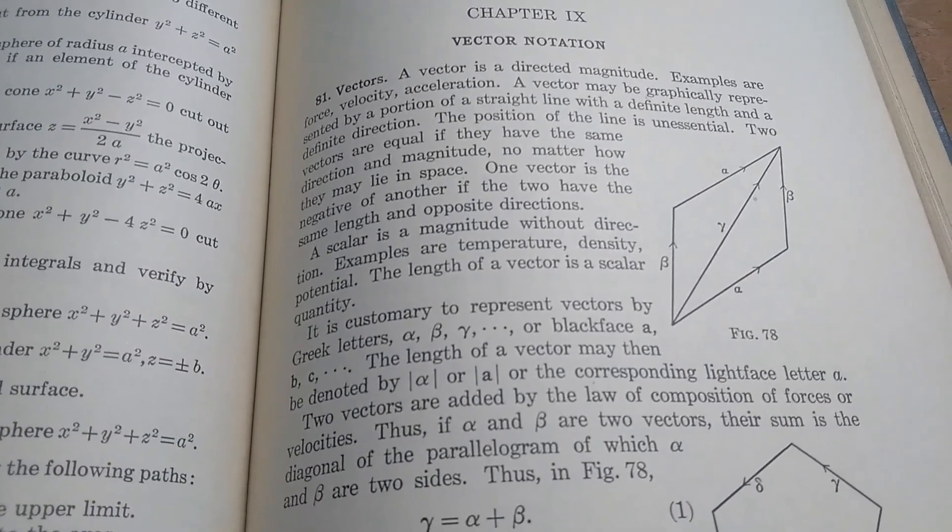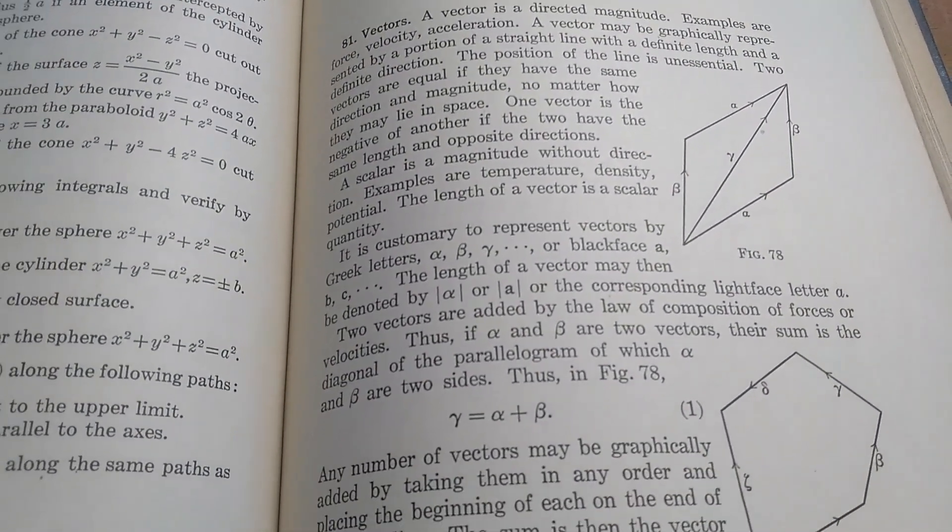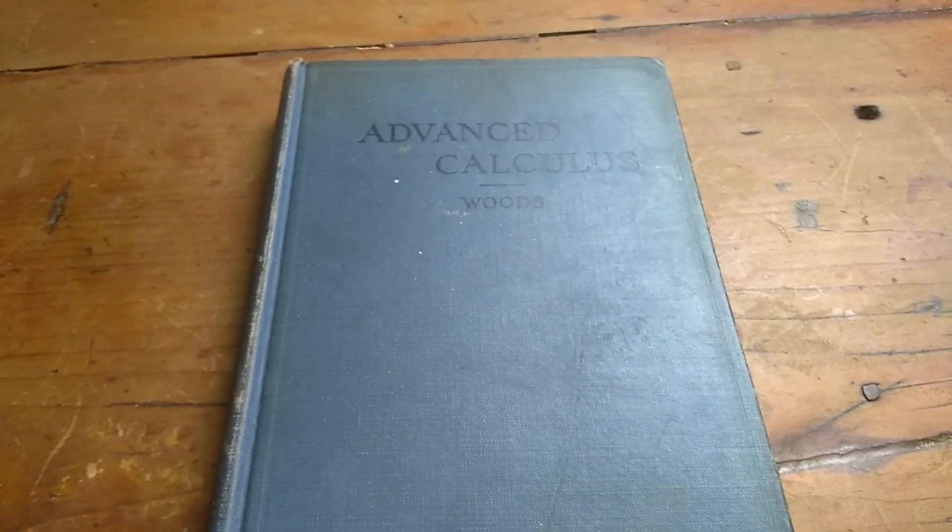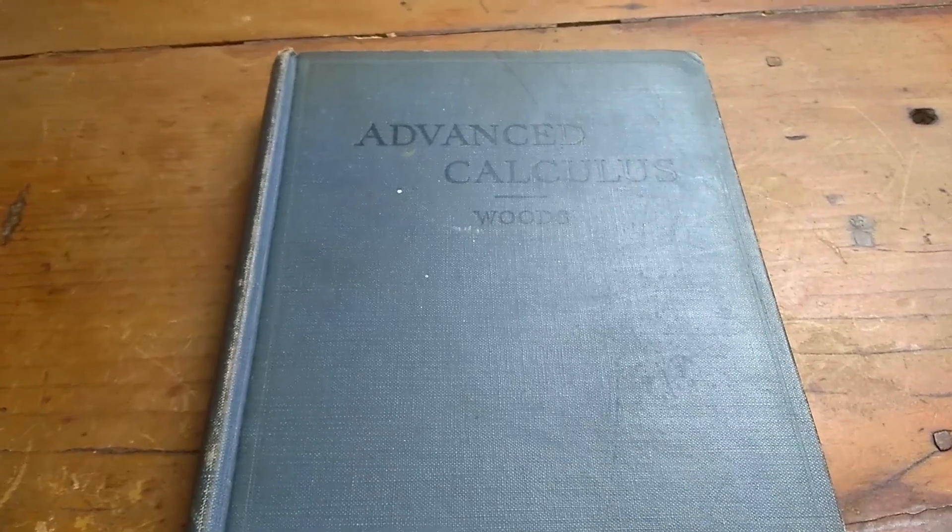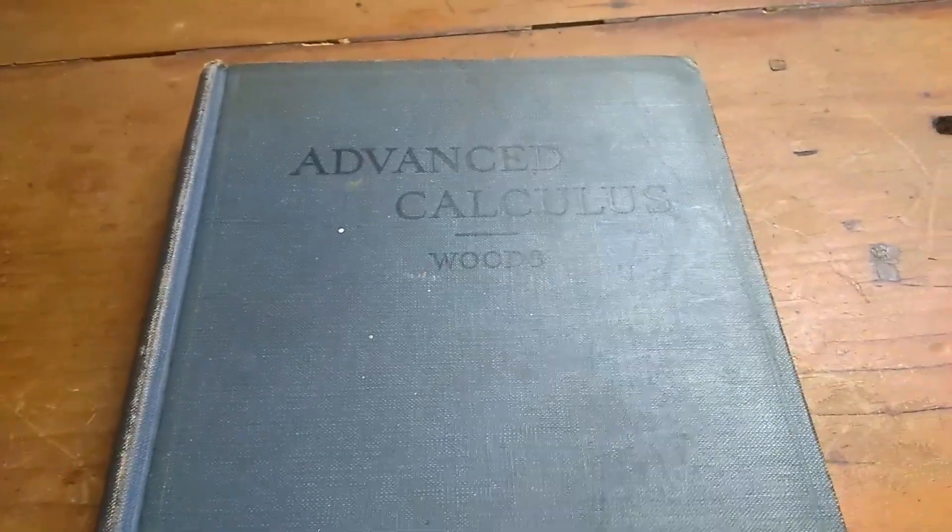If Feynman actually did use this book to learn calculus, then he learned it well. I mean, well enough to win the Nobel Prize. So this is one hardcore book from the 20s. Pretty impressive for an advanced calculus book. Again, the book is advanced calculus, and it's written by Woods.